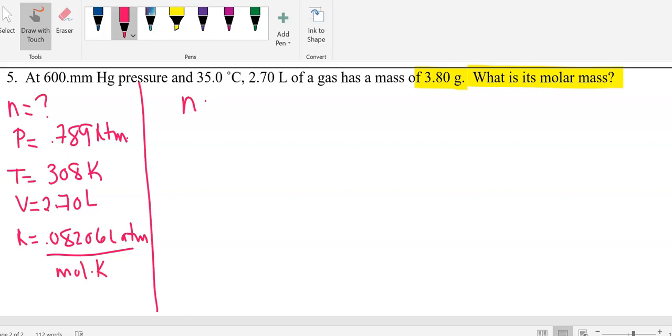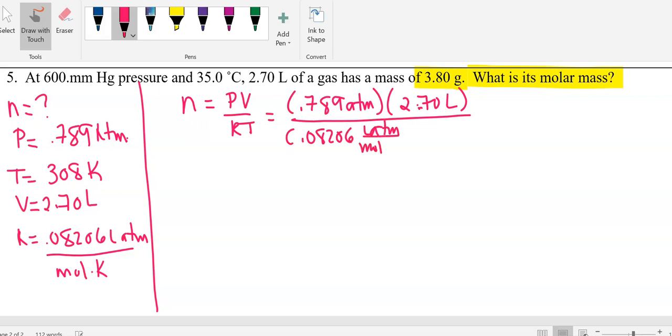Now N is still PV over RT. So let me plug in. Our pressure is... and finally, our temperature is 308.